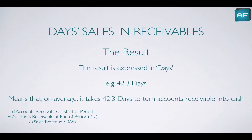The result is expressed in days. For instance, if you calculate a result of 42.3, that's 42.3 days, meaning on average it takes 42.3 days to turn your accounts receivable into cash. So you make a sale on January 1st, it goes into the accounts receivable balance, and 42.3 days later, on average, you collect that balance and bank it in your business bank account.